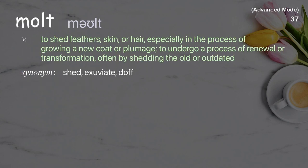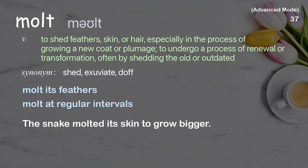Molt: to shed feathers, skin, or hair, especially in the process of growing a new coat or plumage; to undergo a process of renewal or transformation, often by shedding the old or outdated. Examples: molt its feathers, molt at regular intervals. The snake molted its skin to grow bigger.